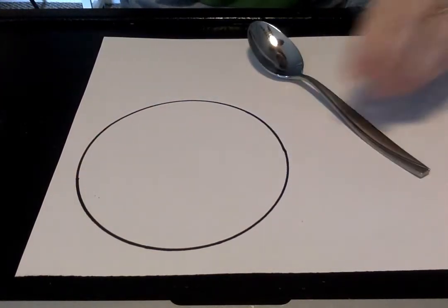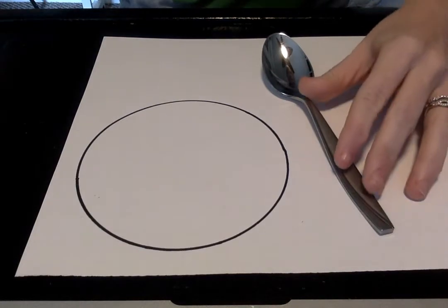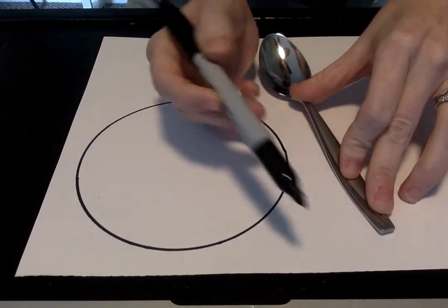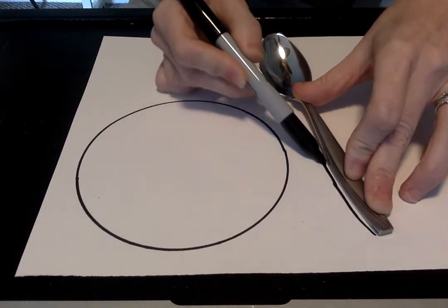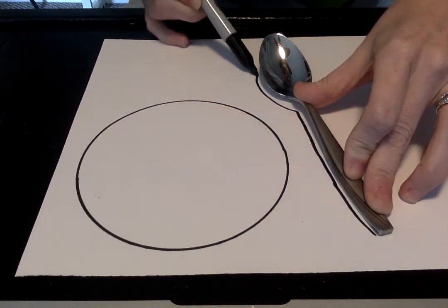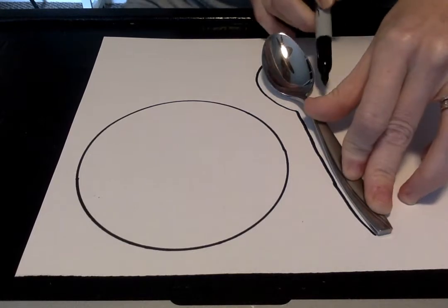Now I'm going to take my spoon and I'm going to put it anywhere on my paper. I think I'm going to go like this and I'm going to do just like I did with my bowl. I'm going to hold down and have my pencil touch the edge and go all the way around.